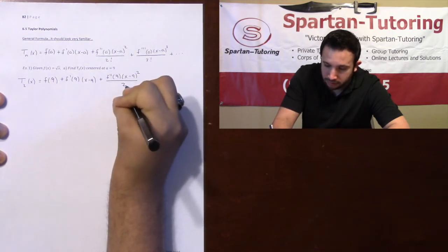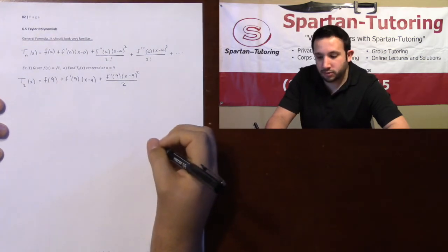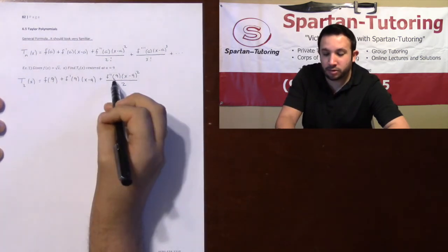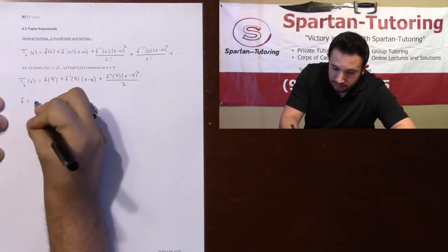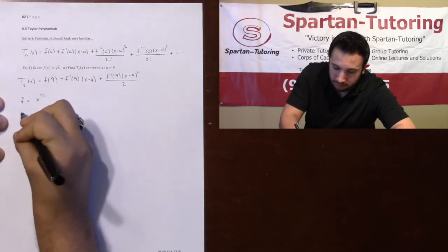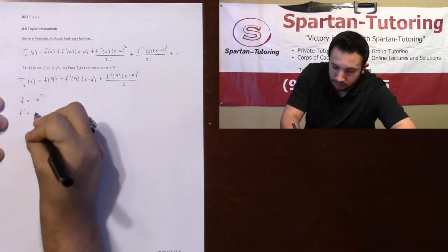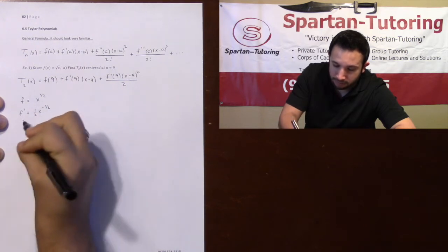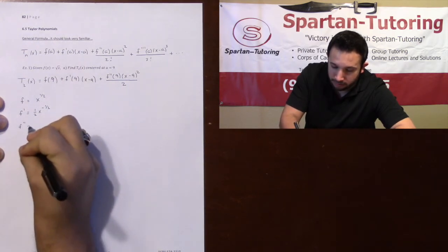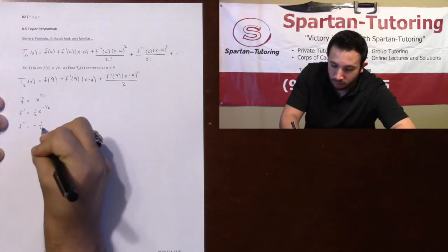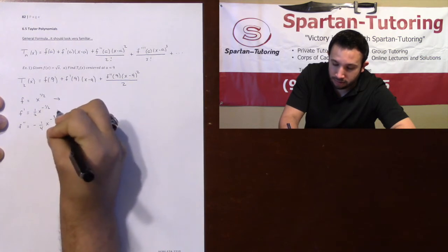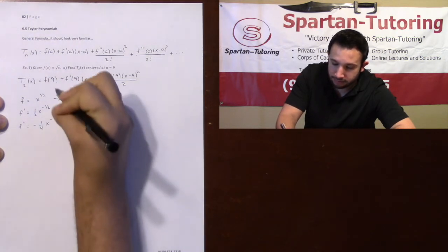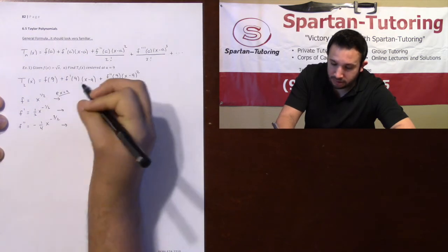My job is to find these three numbers and plug them in. So if your f of x is equal to x to the one half, f prime would be one half x to the negative one half, and then f double prime is going to be negative one fourth x to the negative three halves.